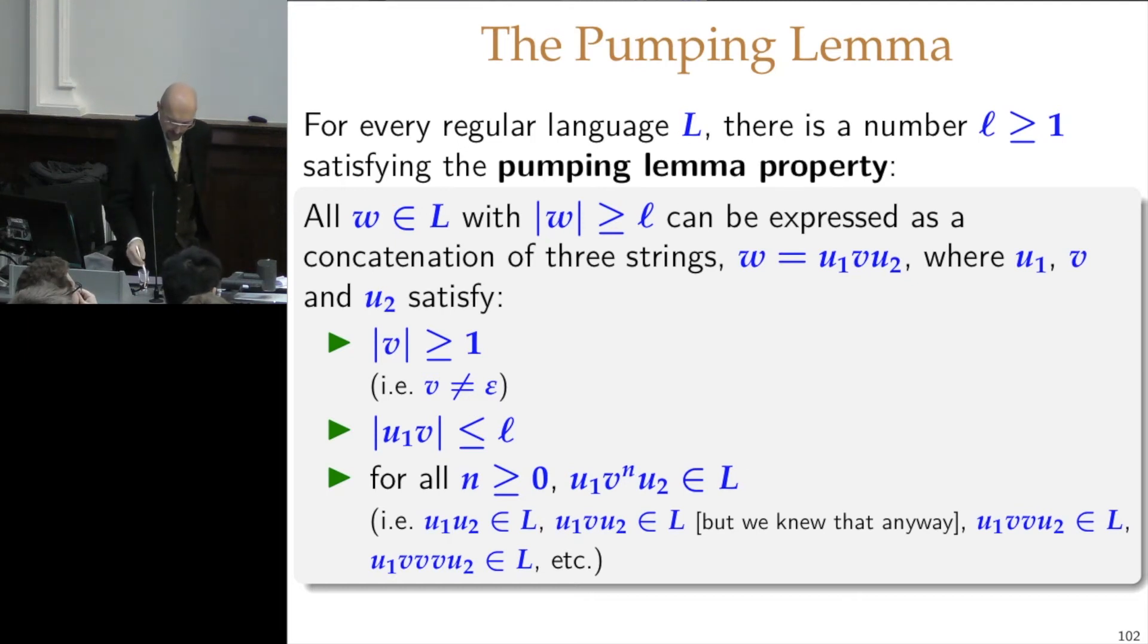And this number satisfies the following property: that any string in the language that is at least as long as ℓ can be pumped. And pumping a string means with a special recipe that we describe next, we make longer and longer strings according to a pattern. And all the pumped strings will belong to the language we are talking about. So as soon as a string in the language is longer than ℓ, longer or equal length to ℓ, then the pumping lemma guarantees out of that string I can generate infinitely many other strings.